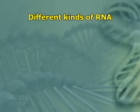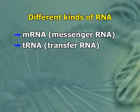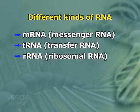Chargaff's rule is not followed in case of RNA due to its single-stranded structure, so cytosine and guanine content is not equal in RNA. In the protein synthesis process, three different kinds of RNA serve in three different roles: mRNA means messenger RNA, tRNA means transfer RNA, and rRNA means ribosomal RNA.